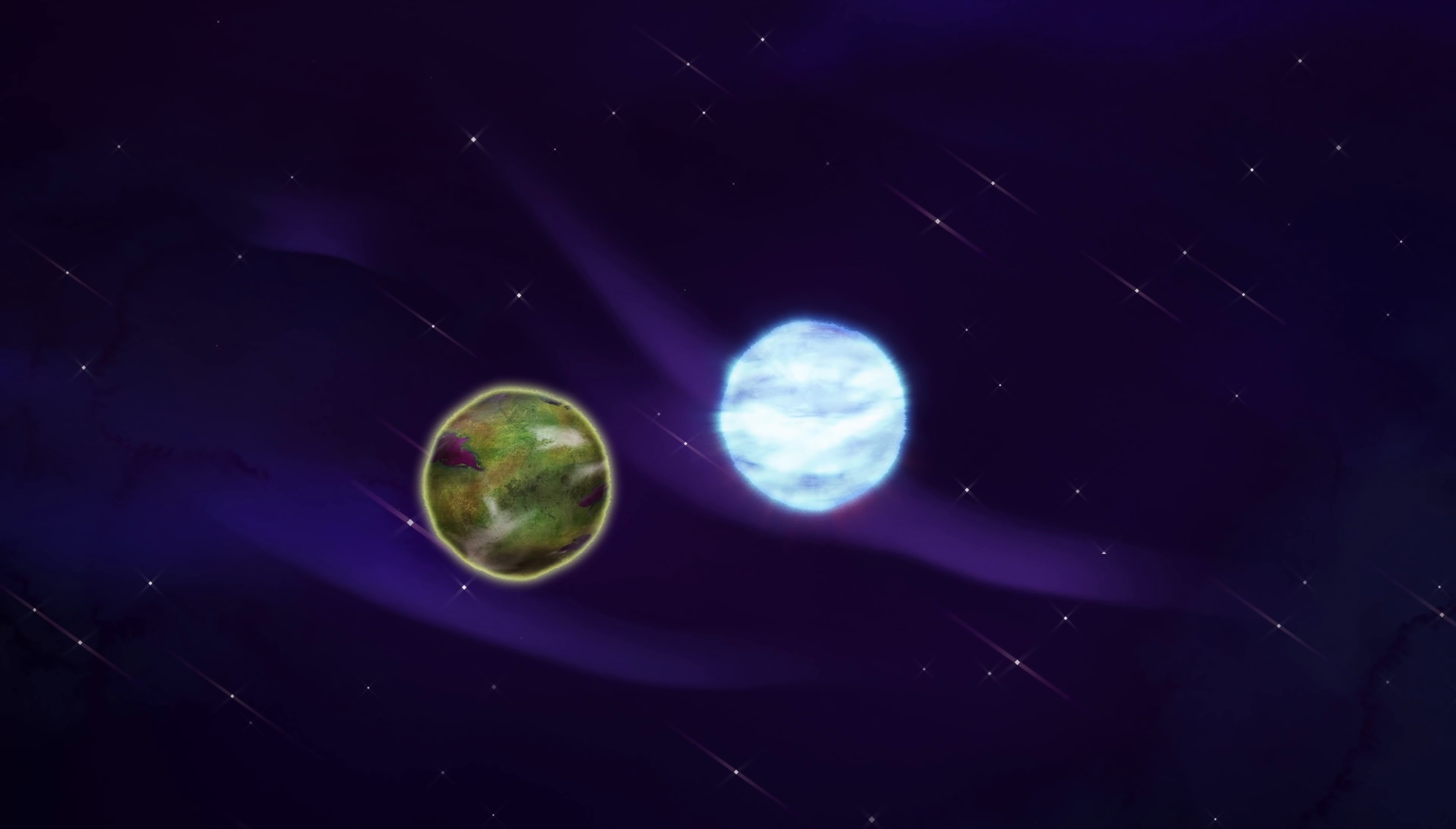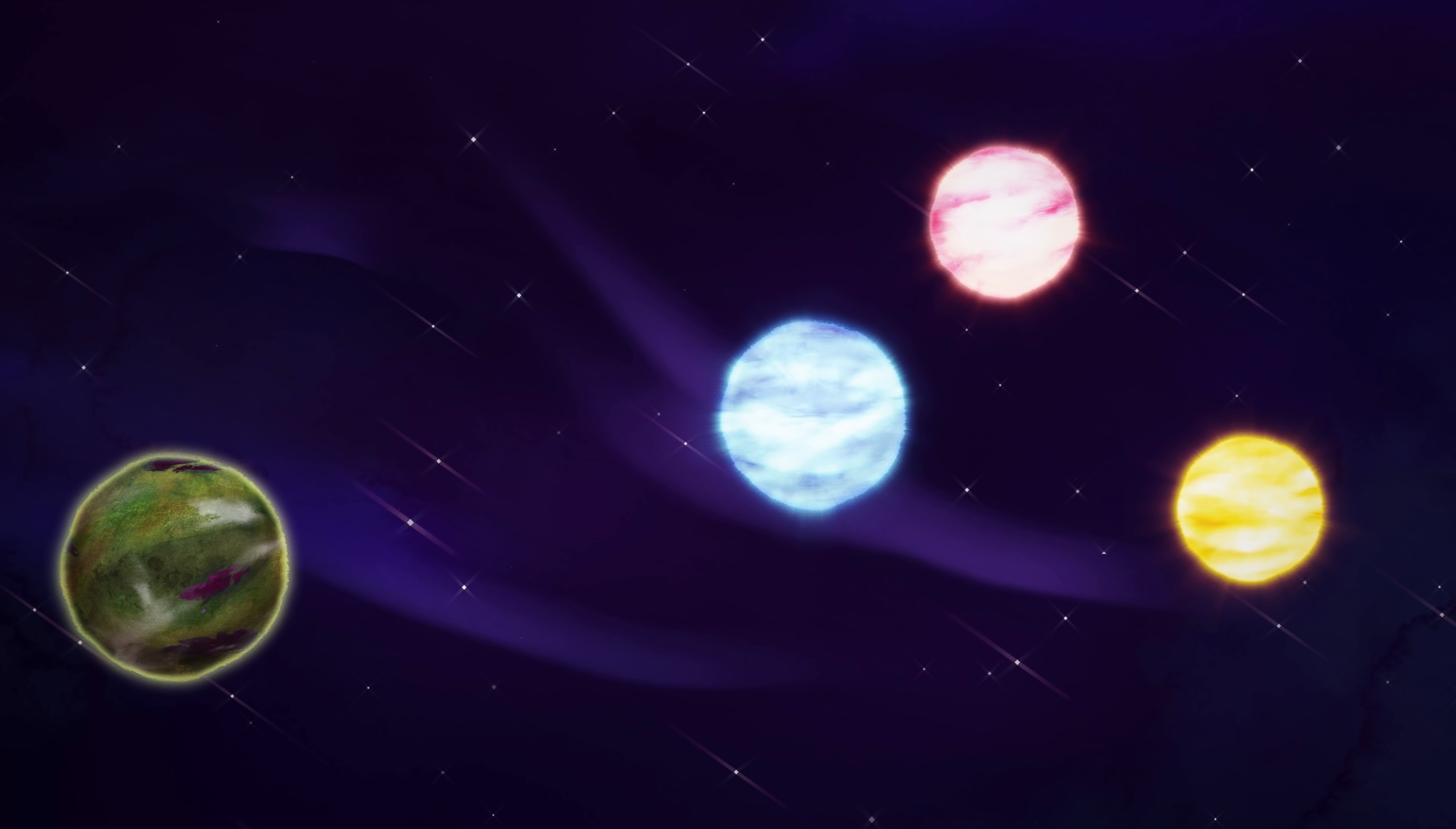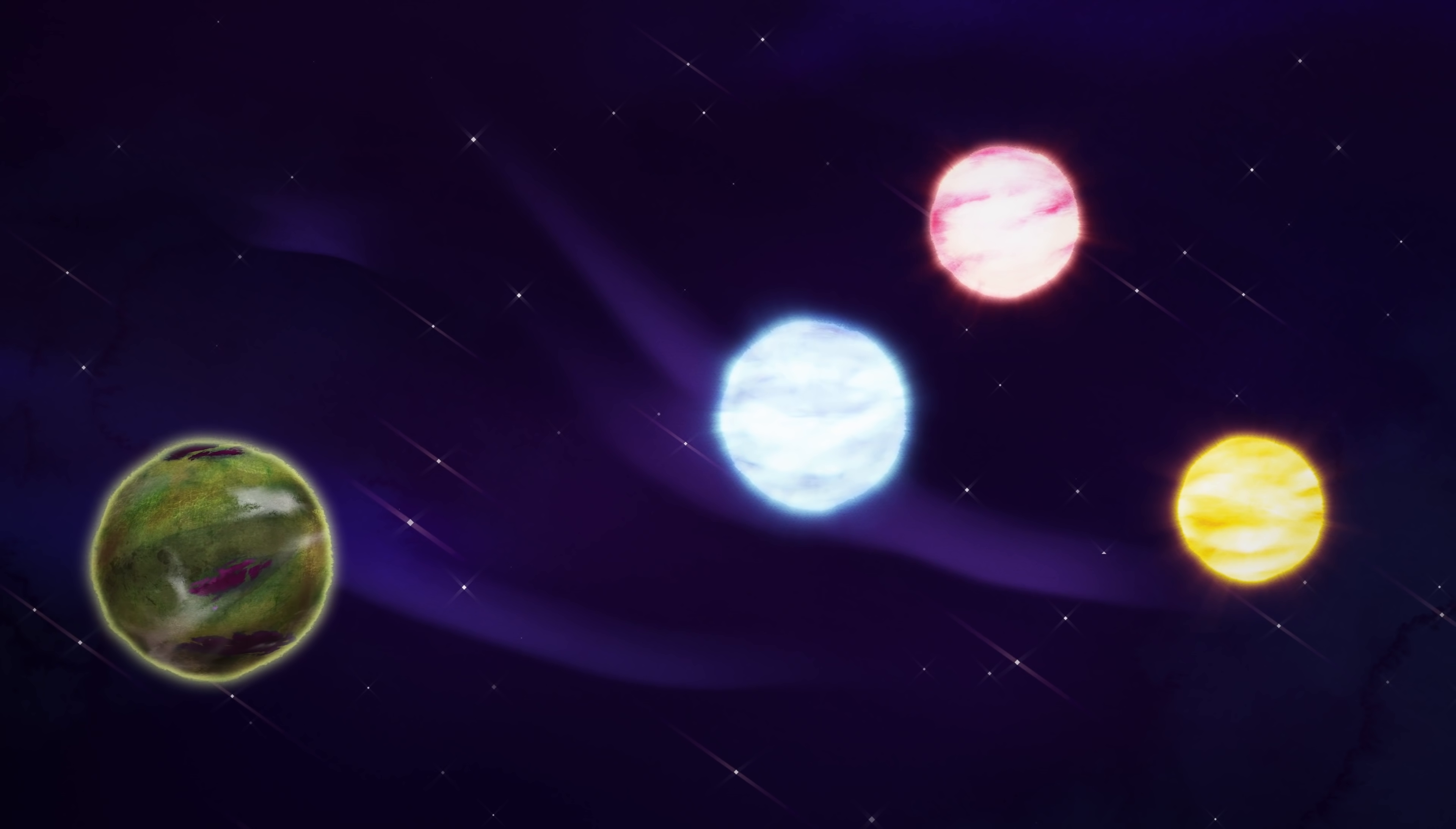Some planets are closer to their stars, some are super far. Some even orbit multiple stars. Imagine having two or three suns in the sky.